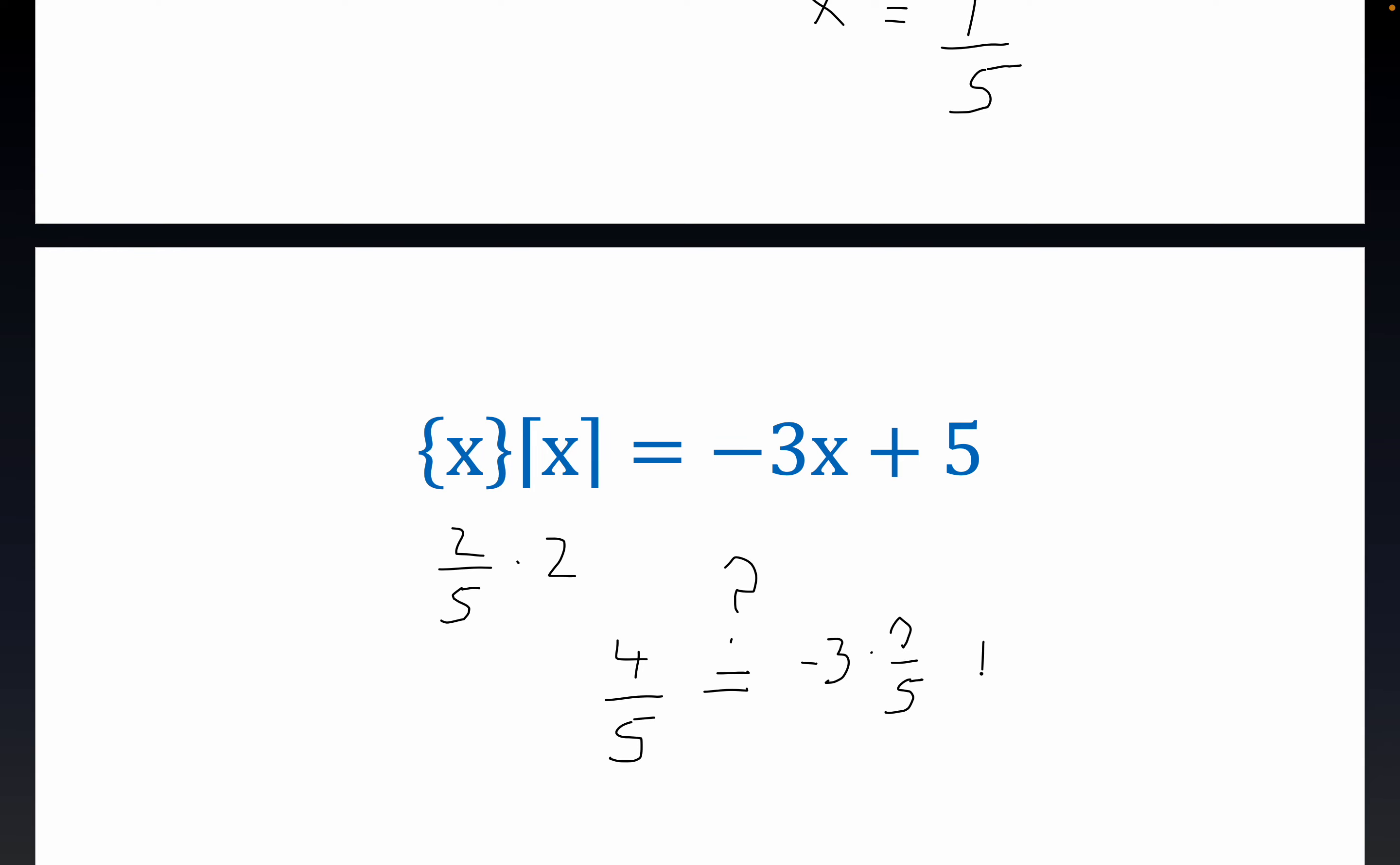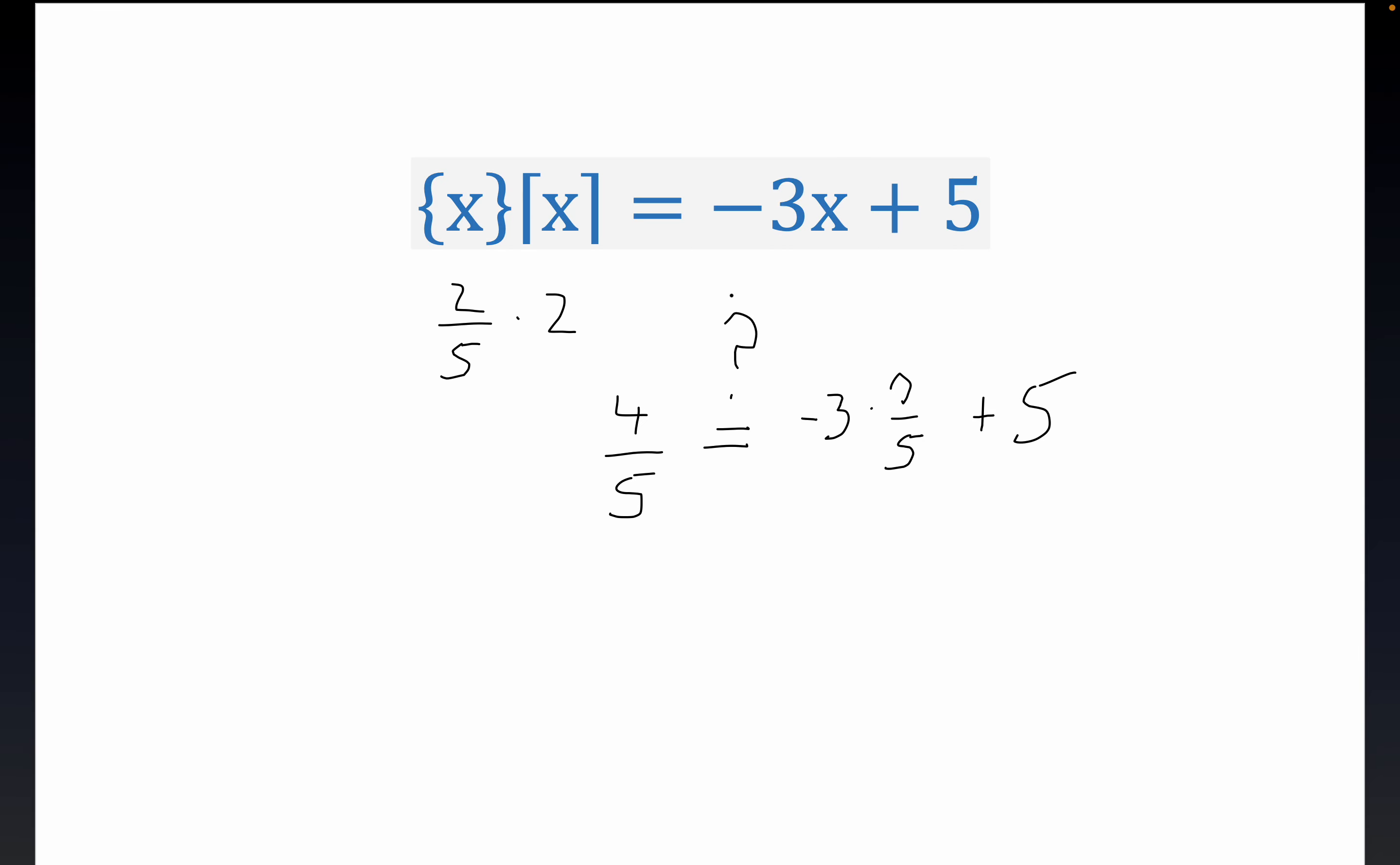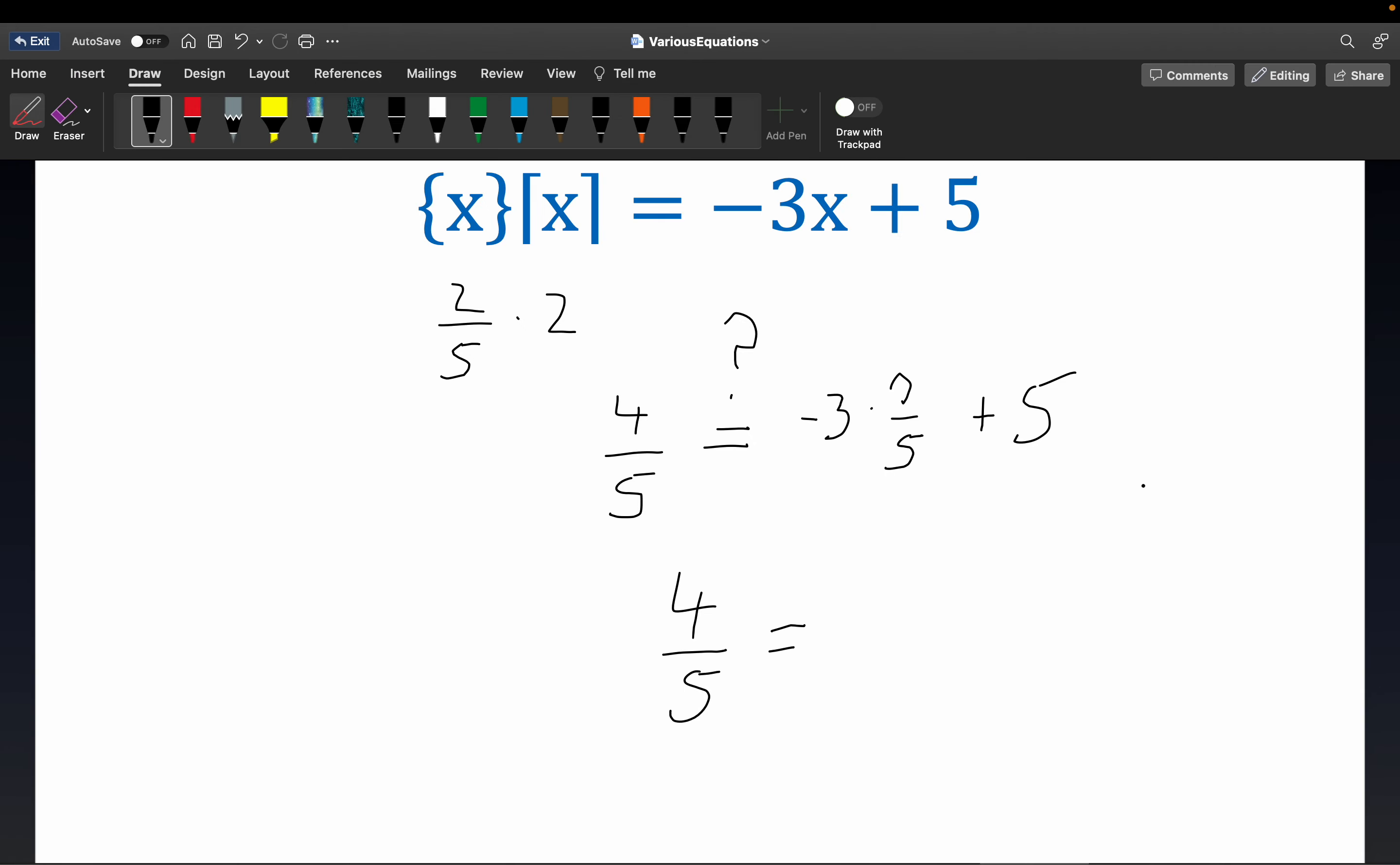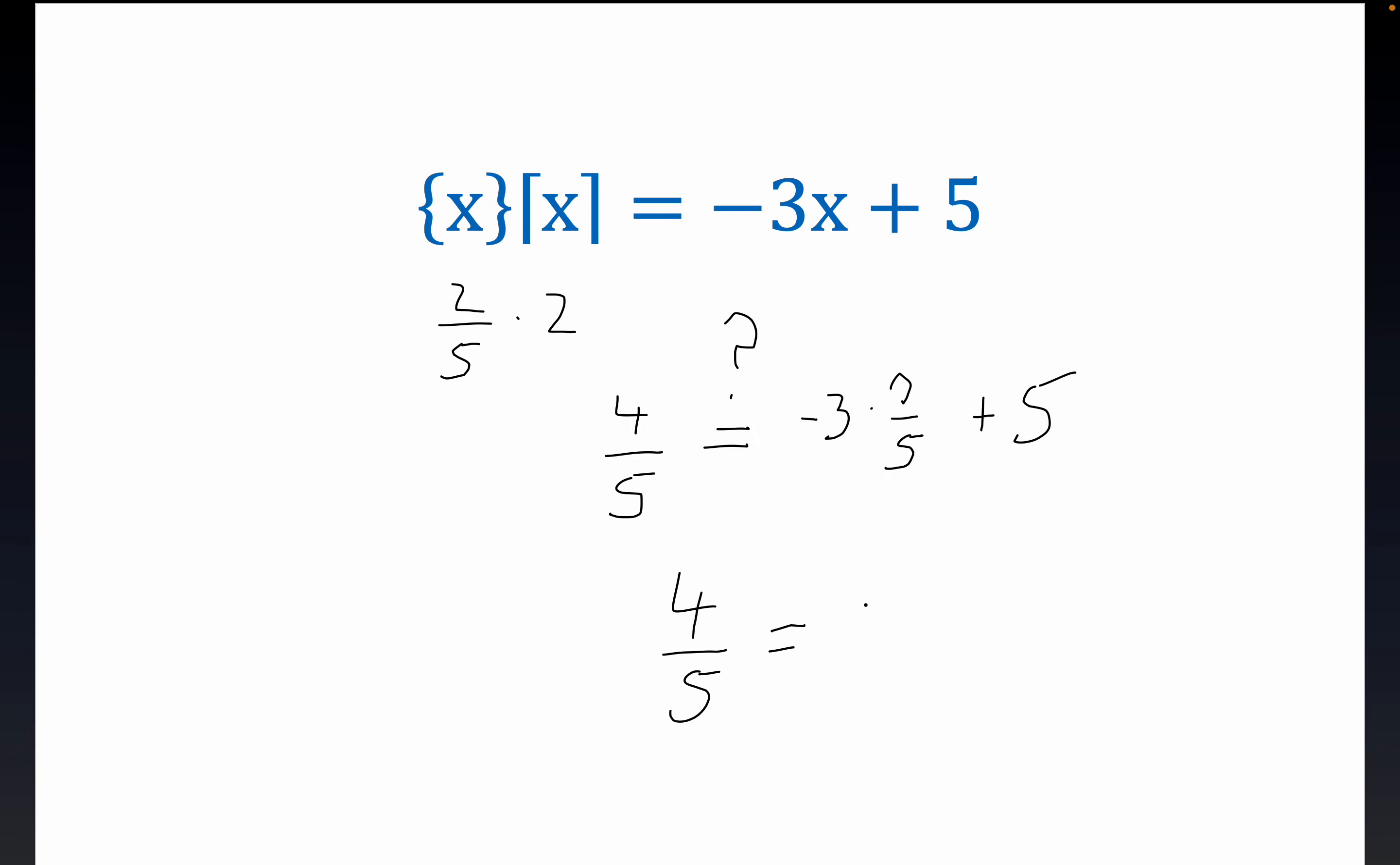We're asking a question here. We're not asserting it's true. We're checking to see if this is true. And, folks, it looks like we're in luck here because 4 over 5 does equal, well, this is 21 over 5. So what we have here, folks, is minus 21 plus 25 over 5. And so let's put a big, fat check mark right there. We got it right.